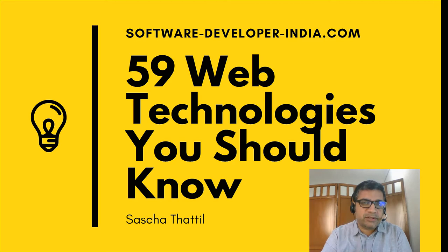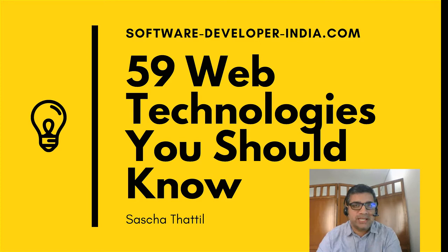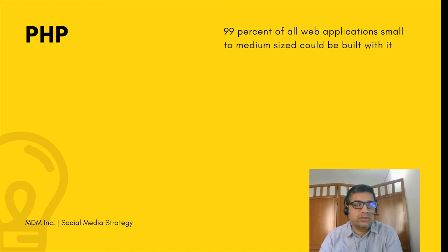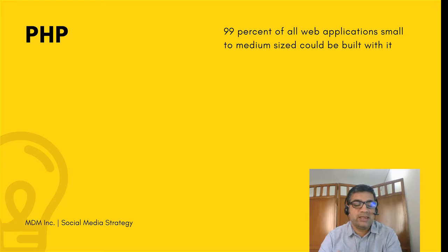So if someone says "Python" or "Java," you should know approximately what it is. Let's dive in. The first is PHP. PHP is not a programming language — it's a scripting language — but it is mainly used for building web applications. You could build almost 99% of all web applications you see online with PHP, though it may not have strong performance if millions of users access it simultaneously. In most applications used by only a few hundred people a day, PHP is perfectly fine.